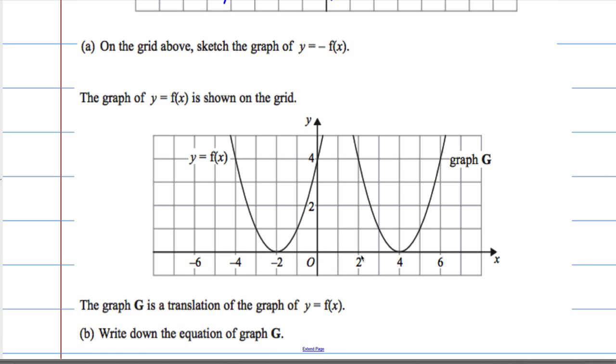Well, the graph, we can see, has shifted 1, 2, 3, 4, 5, 6 places to the right, which means that g is equal to f of x minus 6. It's shifted 6 places to the right, so it would be f of x minus 6. If we wanted the graph to go to the left, it would be f of x plus 6.